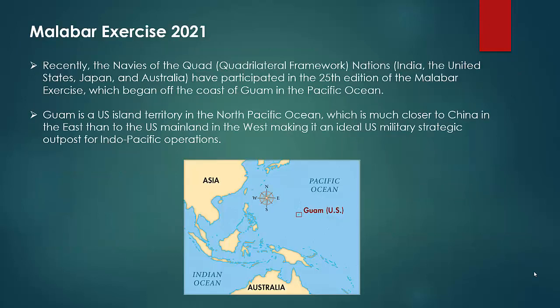Next topic is related to Malabar Exercise 2021. This is one of the most important naval exercises — joint exercises in the entire world. Basically, this exercise involves the Quad countries — the Quadrilateral Security Dialogue — which was established in 2007 and revived in 2017. This organization called Quad was built so that we can counter China.